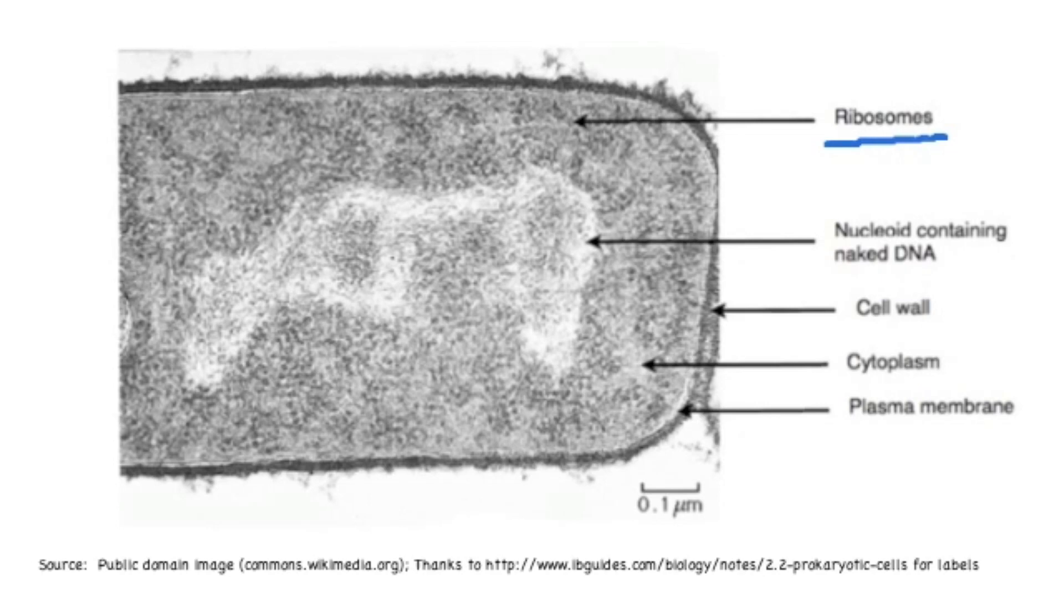Next you have the nucleoid region, which is lighter and irregularly shaped towards the middle of the cell.